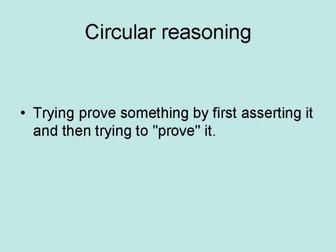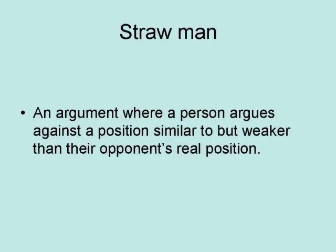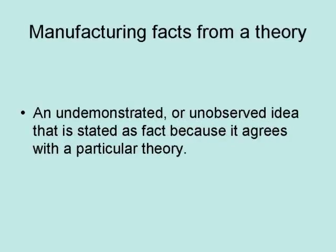Circular reasoning is trying to prove something by first asserting it and then trying to prove it. A straw man is an argument where a person argues against a position similar to but weaker than their opponent's real position.